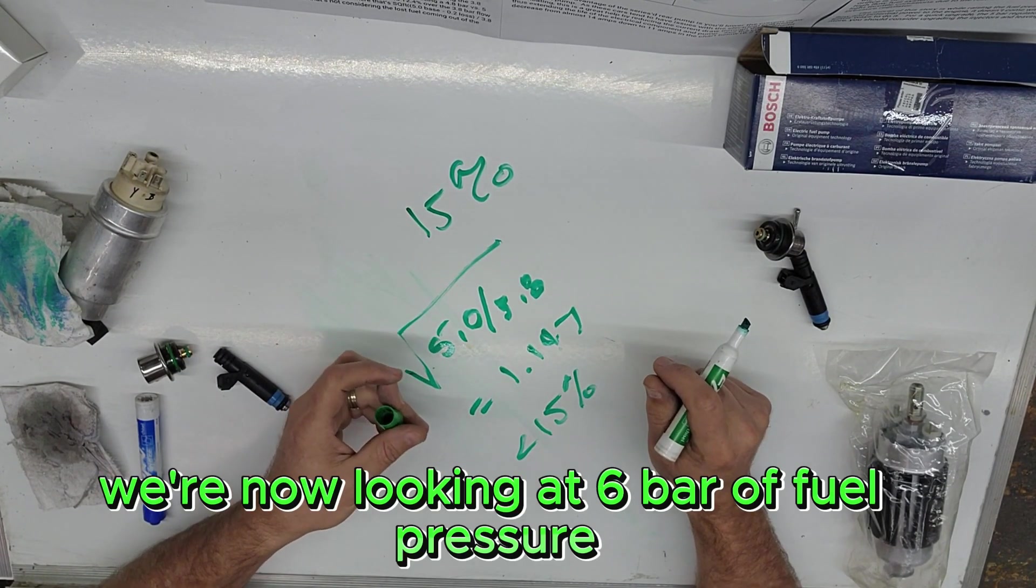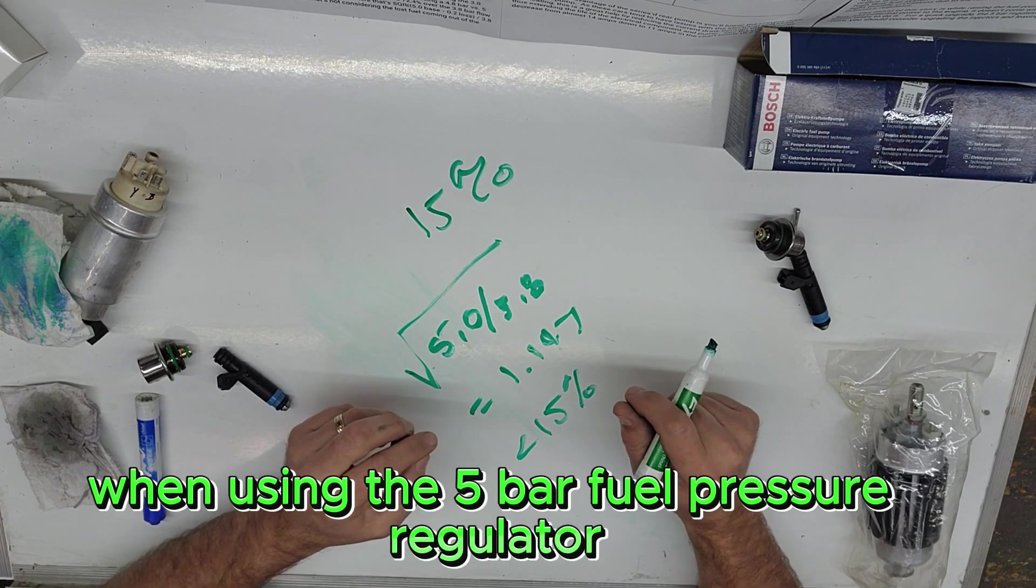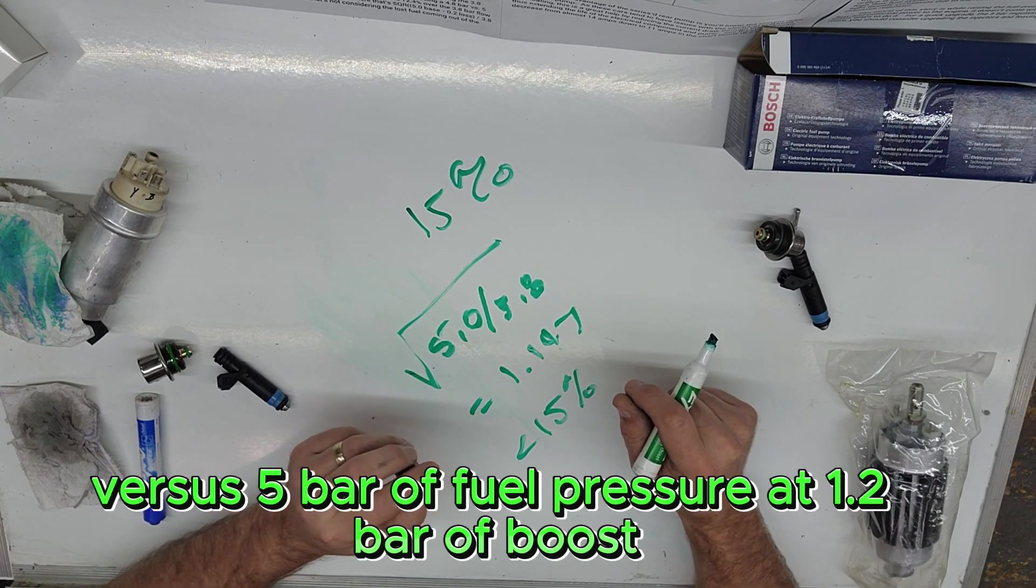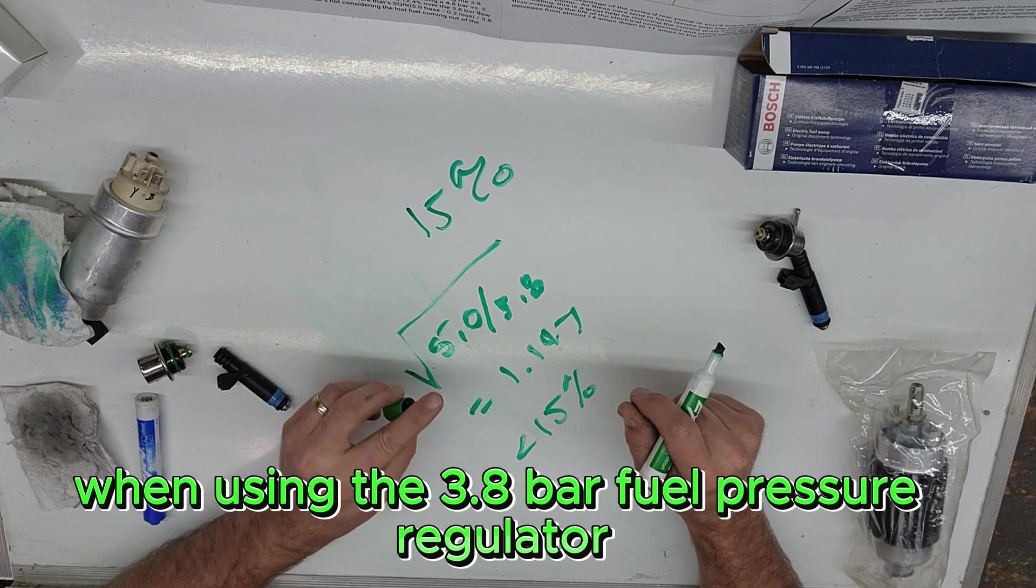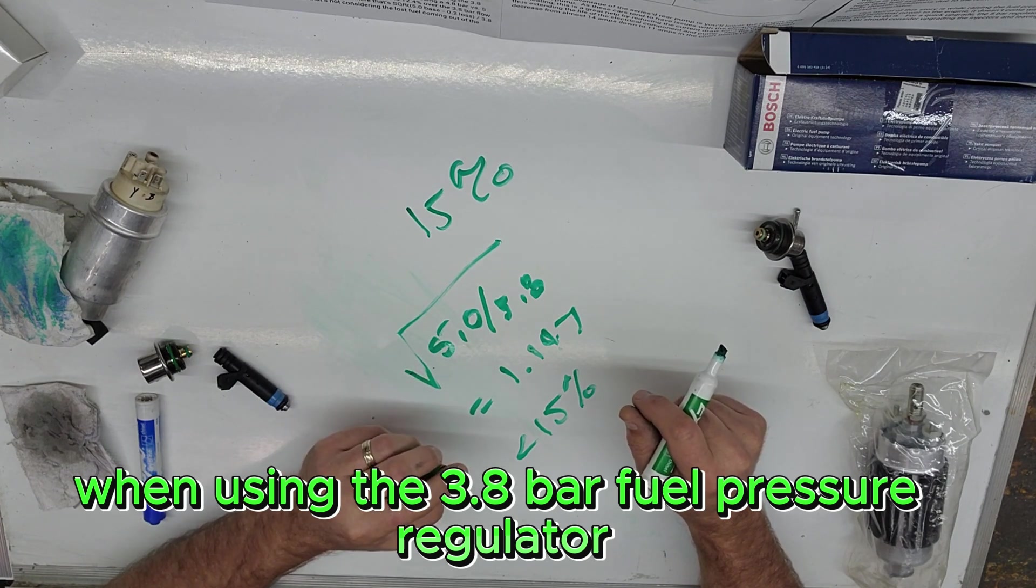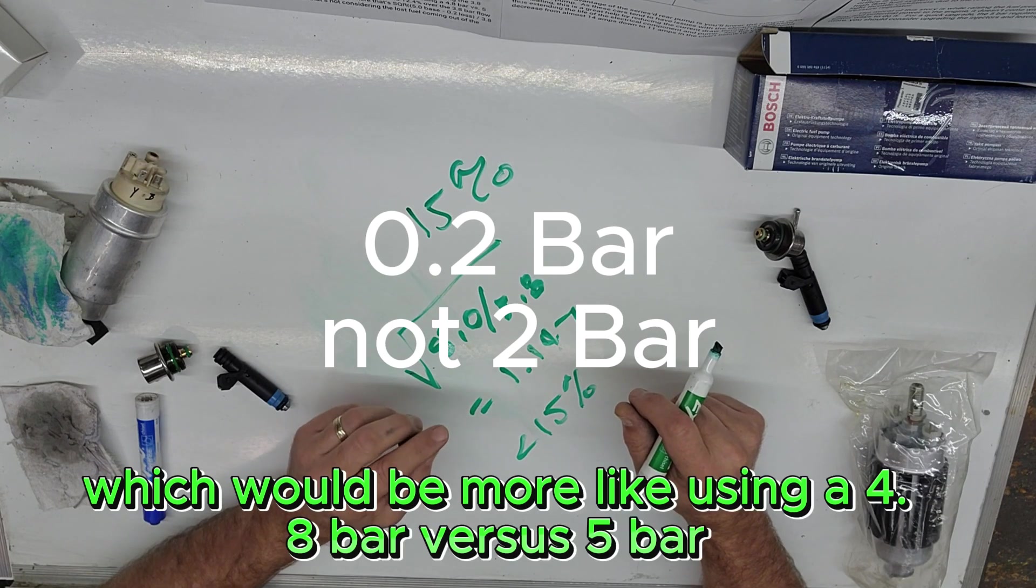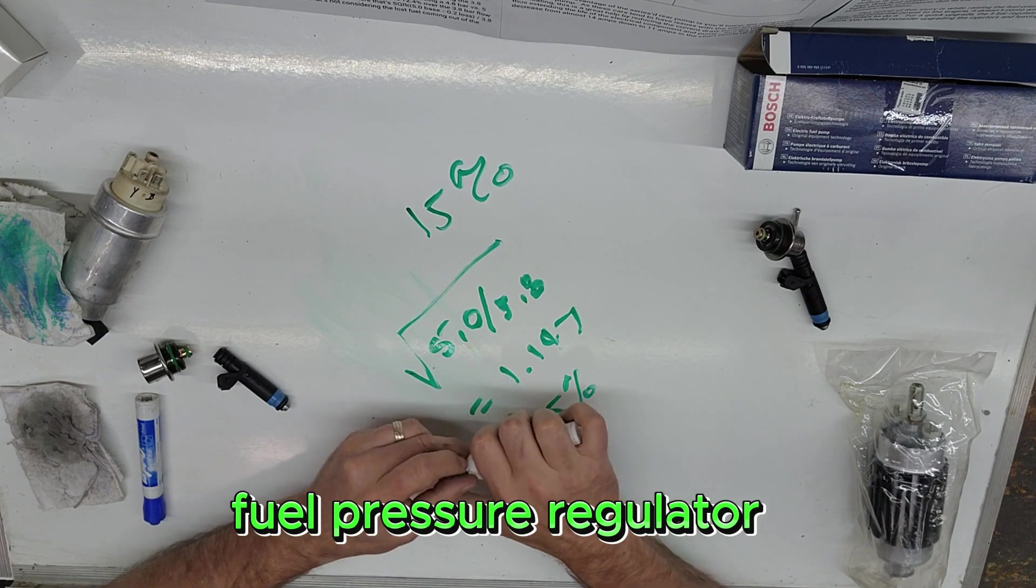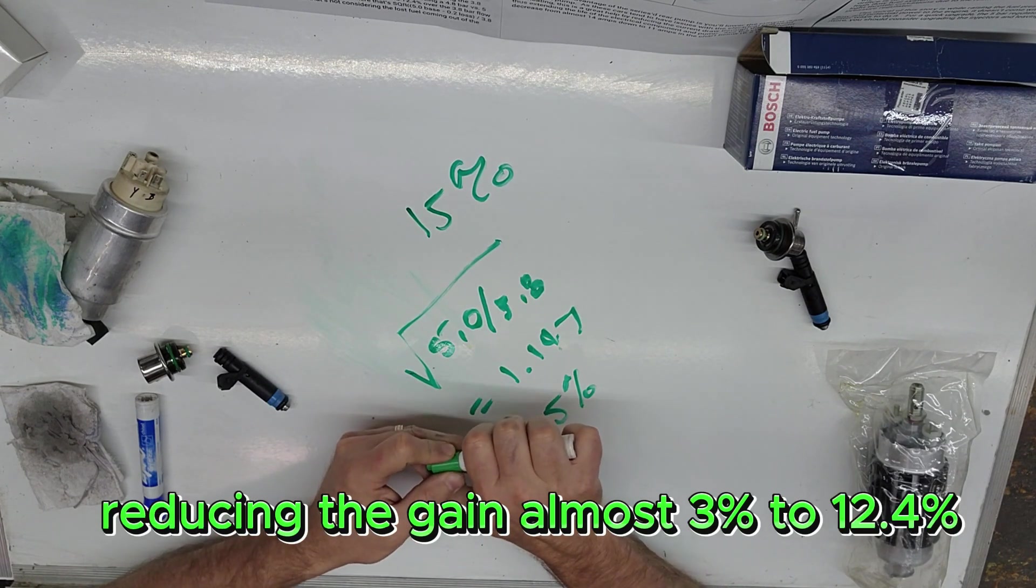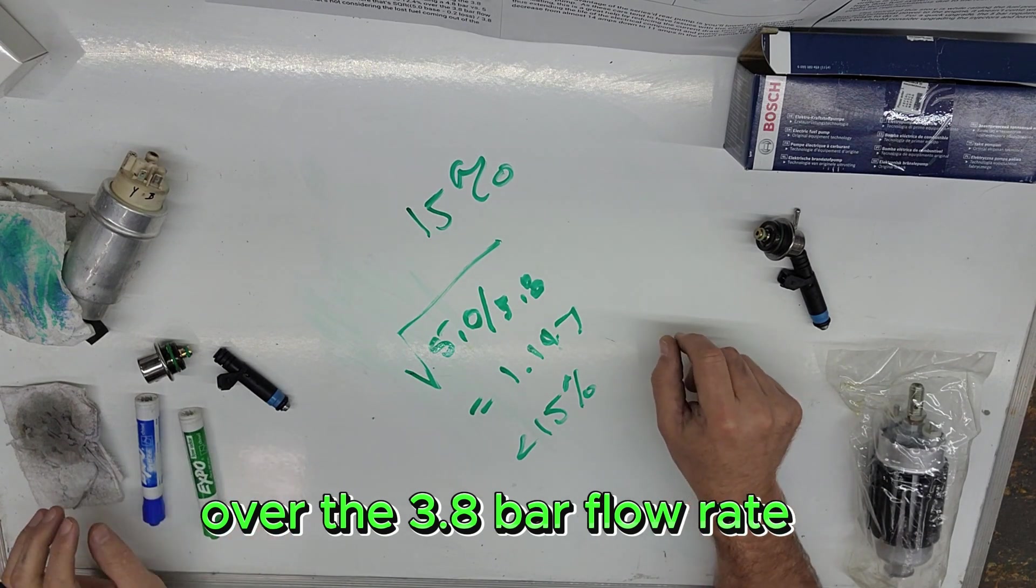We're now looking at 6 bar of fuel pressure at 1.2 bar of boost when using the 5 bar fuel pressure regulator versus 5 bar of fuel pressure at 1.2 bar of boost when using the 3.8 bar fuel pressure regulator. A loss of 2 bar fuel pressure, which would be more like using a 4.8 bar versus 5 bar fuel pressure regulator, reducing the gain almost 3 percent to 12.4 percent over the 3.8 bar flow rate.